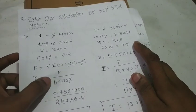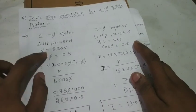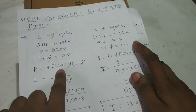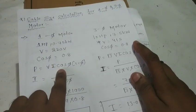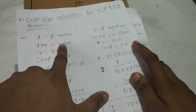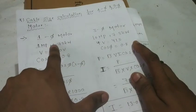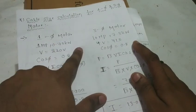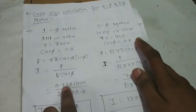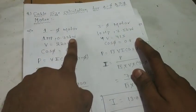I = P / (V·cosφ). Where P is power. Here power is 0.75kW. We have to calculate: 0.75kW into 1000, divided by voltage.